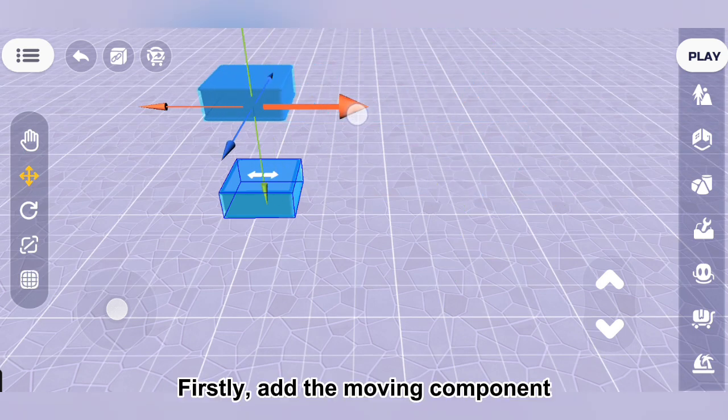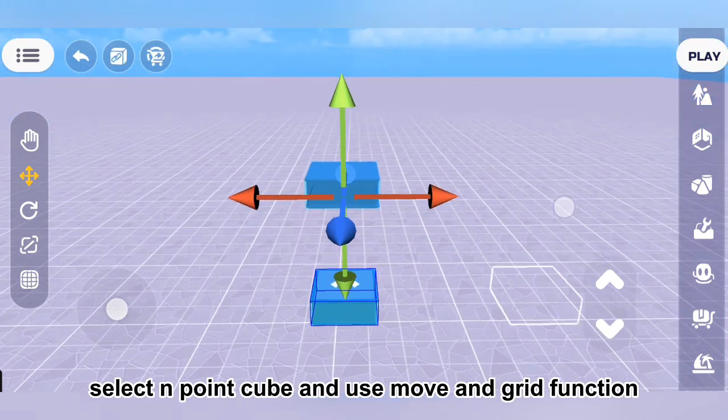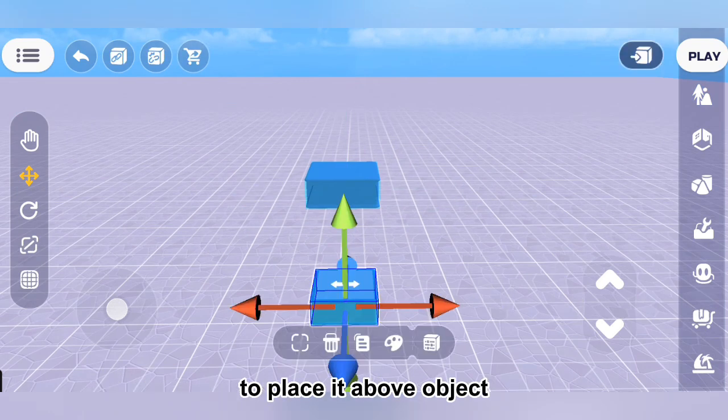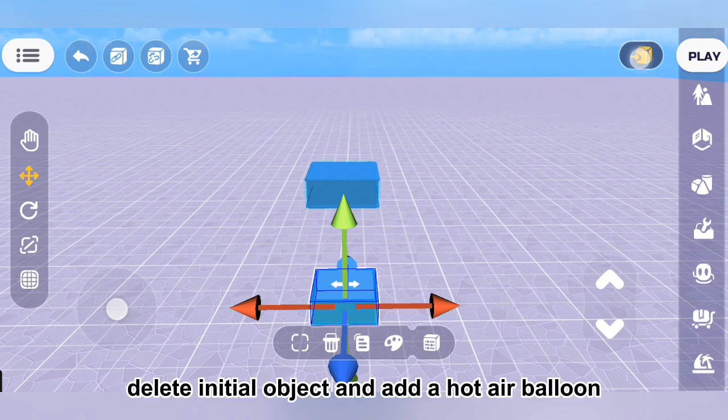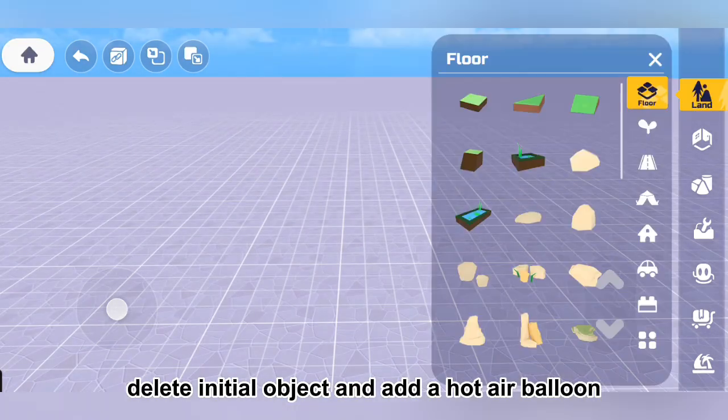Firstly, add the moving component, select endpoint cube and use move and grid function to place it above object. Then, select object, tap enter, delete initial object and add a hot air balloon.